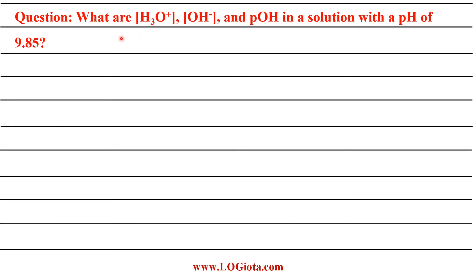The question is: what are the H3O⁺ concentration, OH⁻ concentration, and pOH in a solution with a pH of 9.85? In this question, the pH of the solution is given and we need to find these parameters.